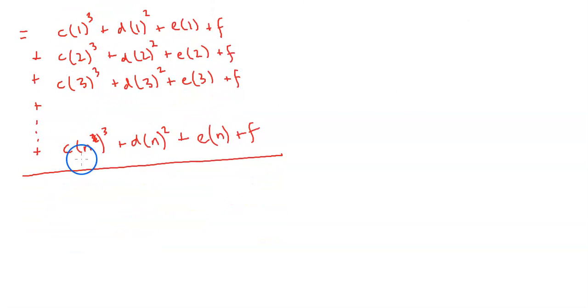And we can see that in this column here we're going to get c times 1 cubed plus 2 cubed plus 3 cubed all the way up to plus n cubed.